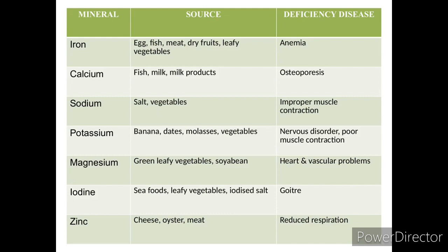Next is potassium. Banana is a rich source of potassium; also dates and molasses. Deficiency of potassium leads to nervous disorders and poor muscle contraction.